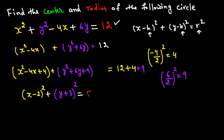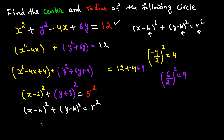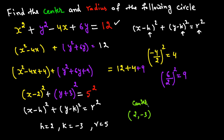Comparing (X − 2)² + (Y + 3)² = 25 with the standard form X minus H squared plus Y minus K squared equals R squared, we get H = 2, K = −3, and R = 5. So the center is (2, −3) and the radius is 5.